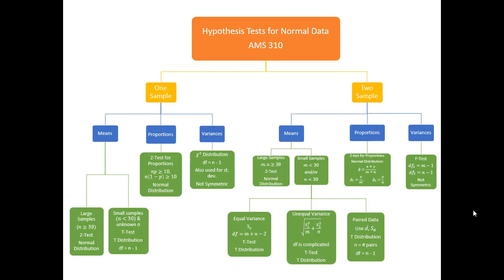So here's our roadmap for hypothesis tests. Assuming these data sets that we're working are normal, we're interested in tests involving one sample. And you can see sort of how this breaks down over here. So in this chapter 8, we'll be covering the left branch of this tree. And then in chapter 9, we'll cover the right branch of the tree.